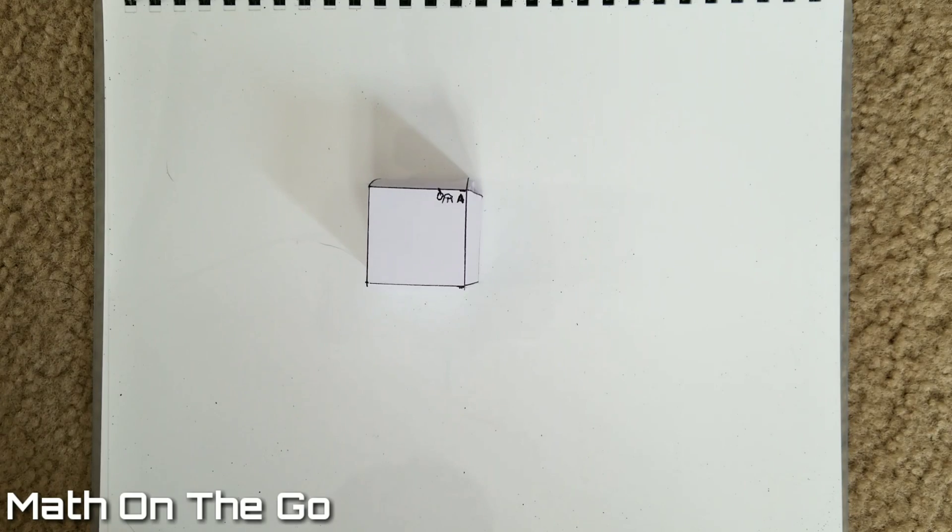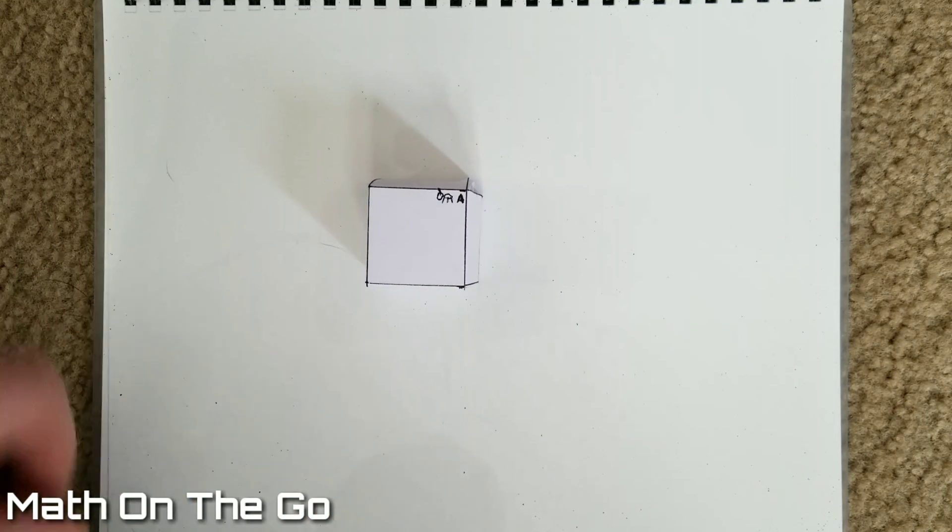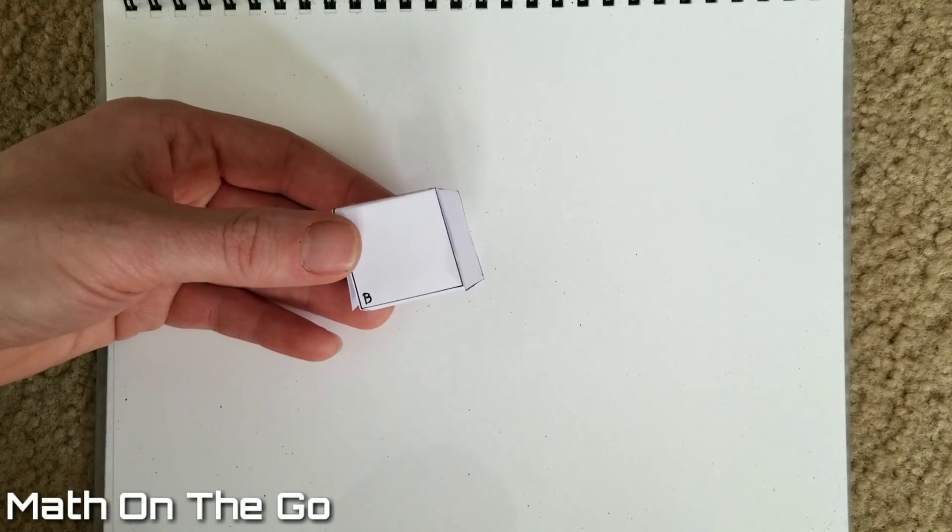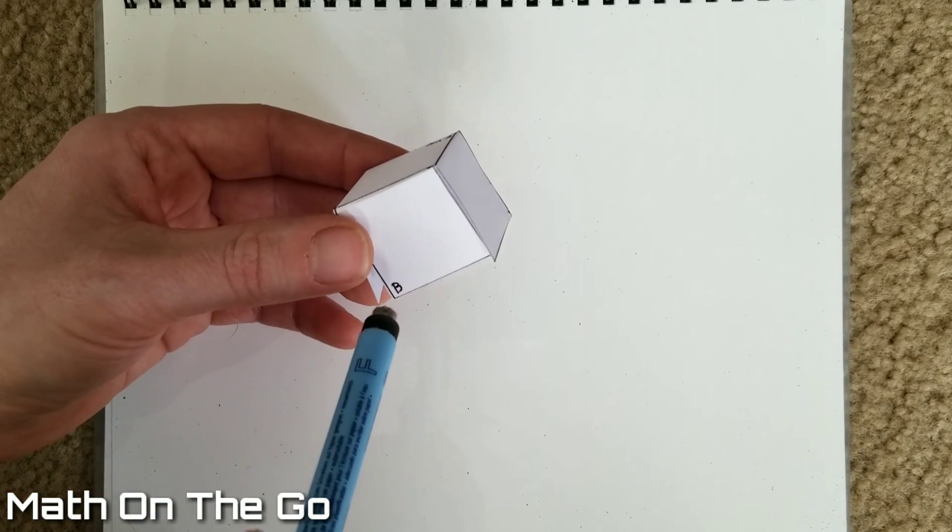If we have this cube with the ant starting at vertex A, we want the ant to walk the shortest distance to get to B. If the ant walks across this edge, this edge, and this edge to get to B, it will have traversed nine centimeters.